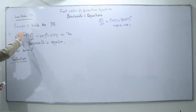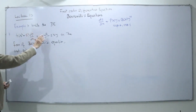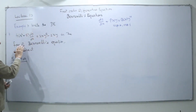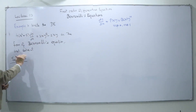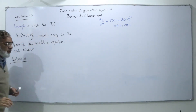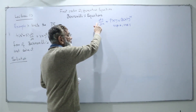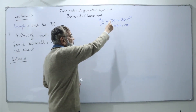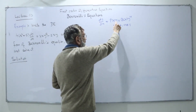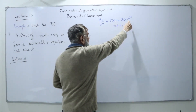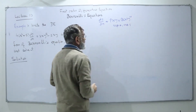In this problem, example 3, we want to write this differential equation in the form of the Bernoulli equation and then solve it. This is the Bernoulli equation. The coefficient of the Bernoulli equation is 1, then we get the function p(x) and then the power of y coming on the right-hand side.